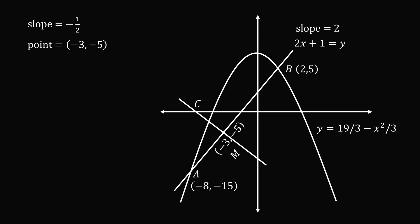So we can use the point slope formula to get the line that goes through CM. So it'll be y minus negative 5 equals the slope negative 1 half multiplied by x minus negative 3. This works out to y plus 5 equals negative 1 half multiplied by the quantity x plus 3.